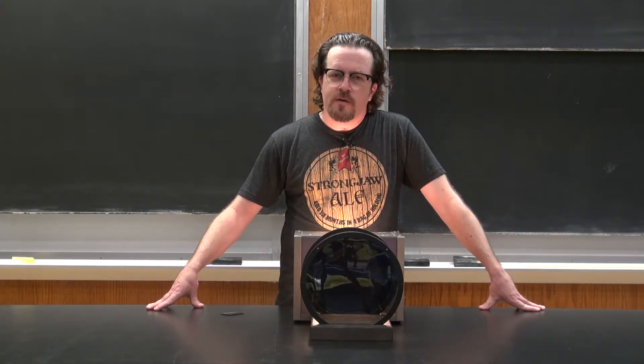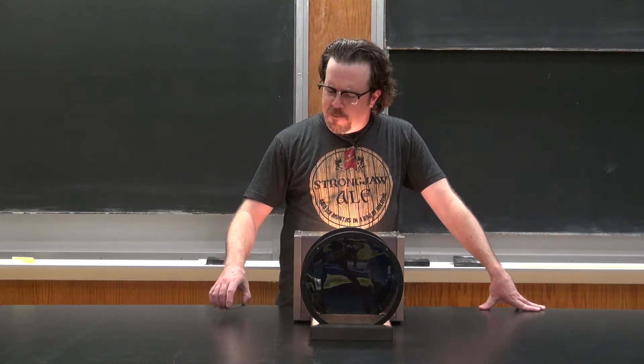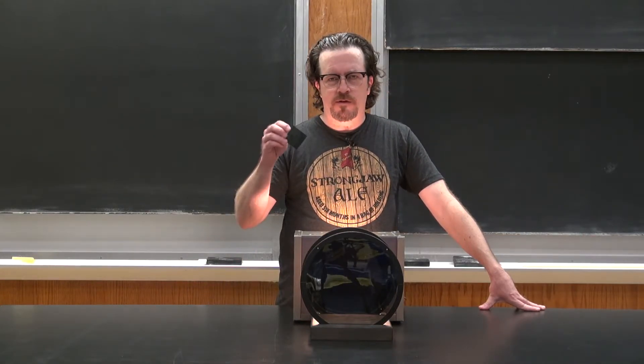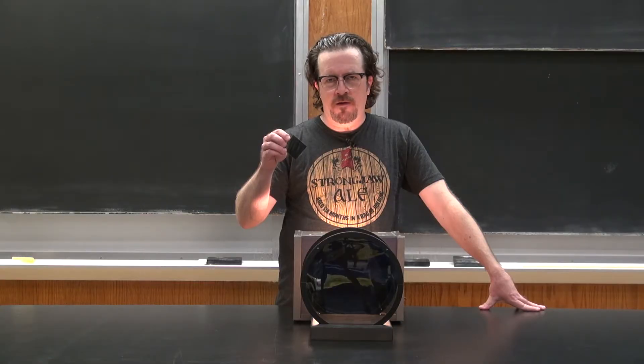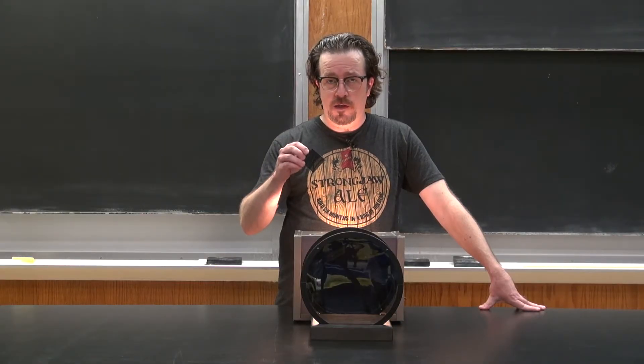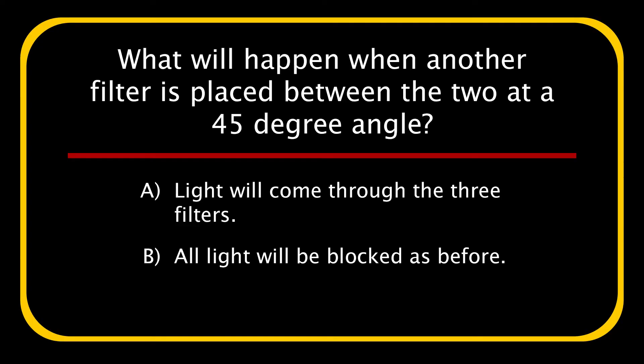My question for you is, what do you think is going to happen if I introduce a third filter at a 45-degree angle between the two filters that we have set up? Do you think A, light will come through the three filters, or B, all the light will be blocked as before?